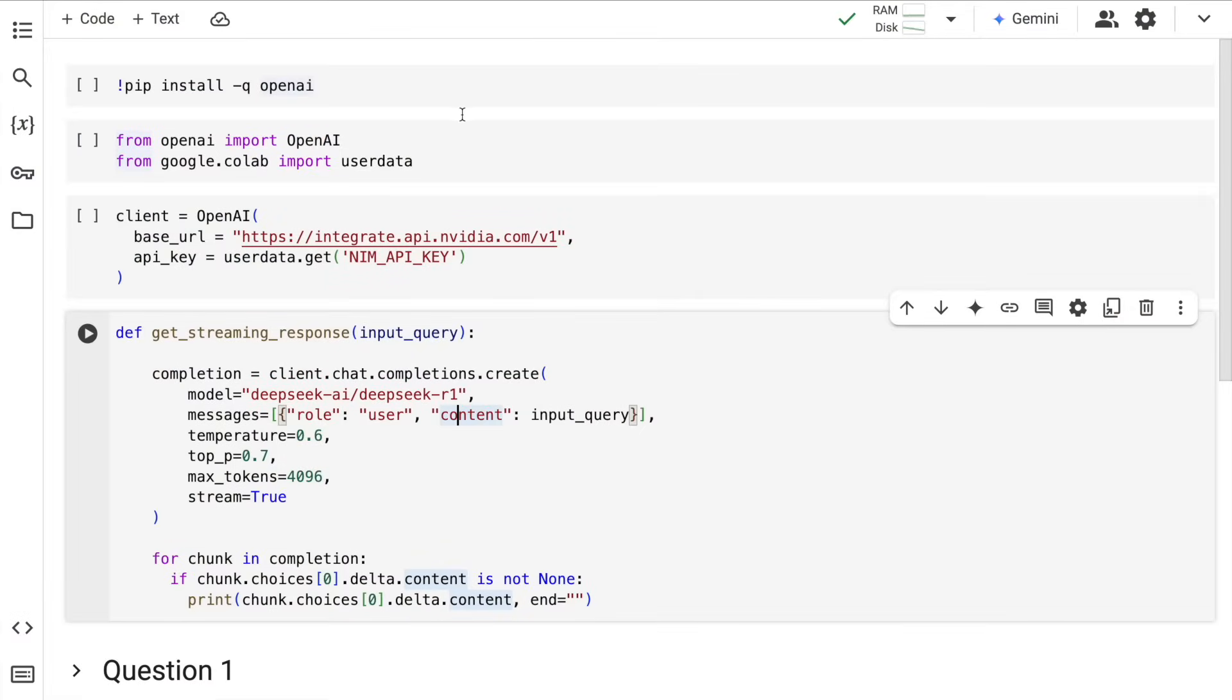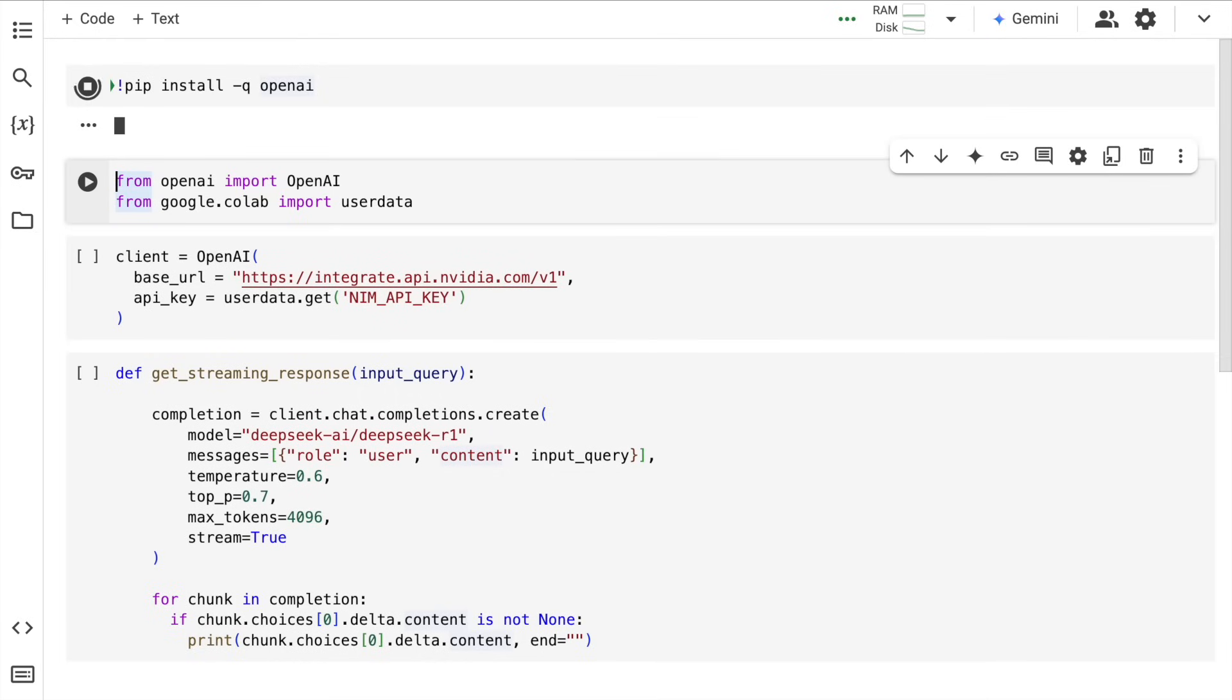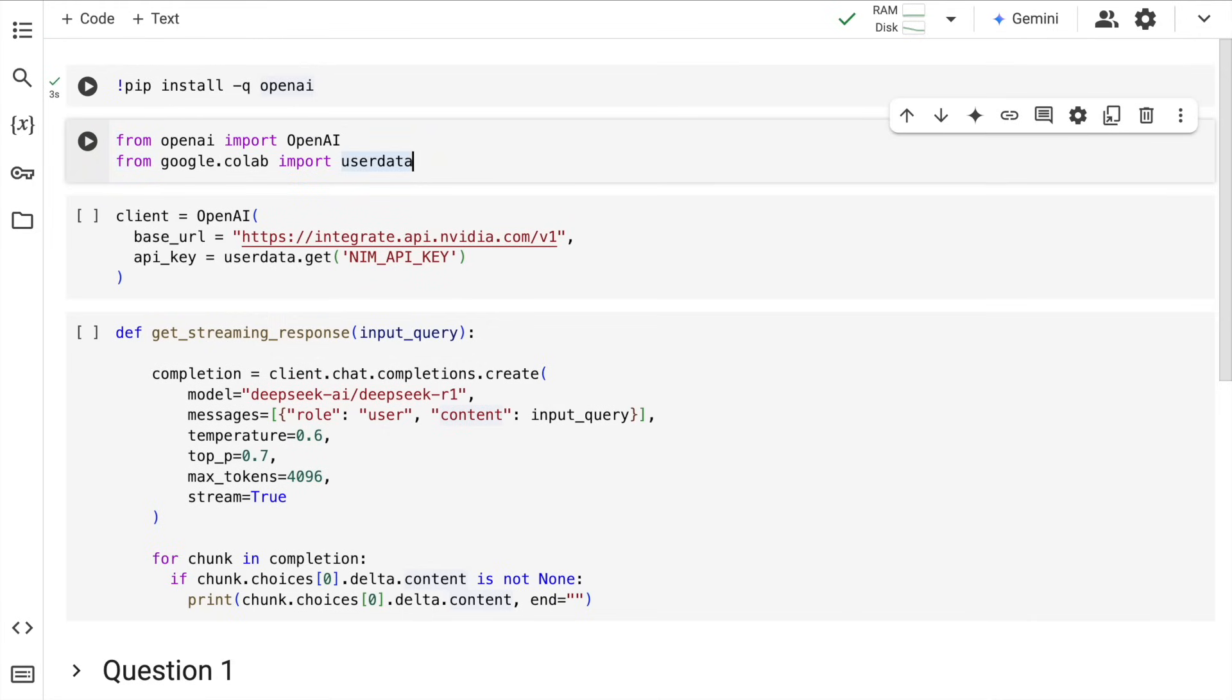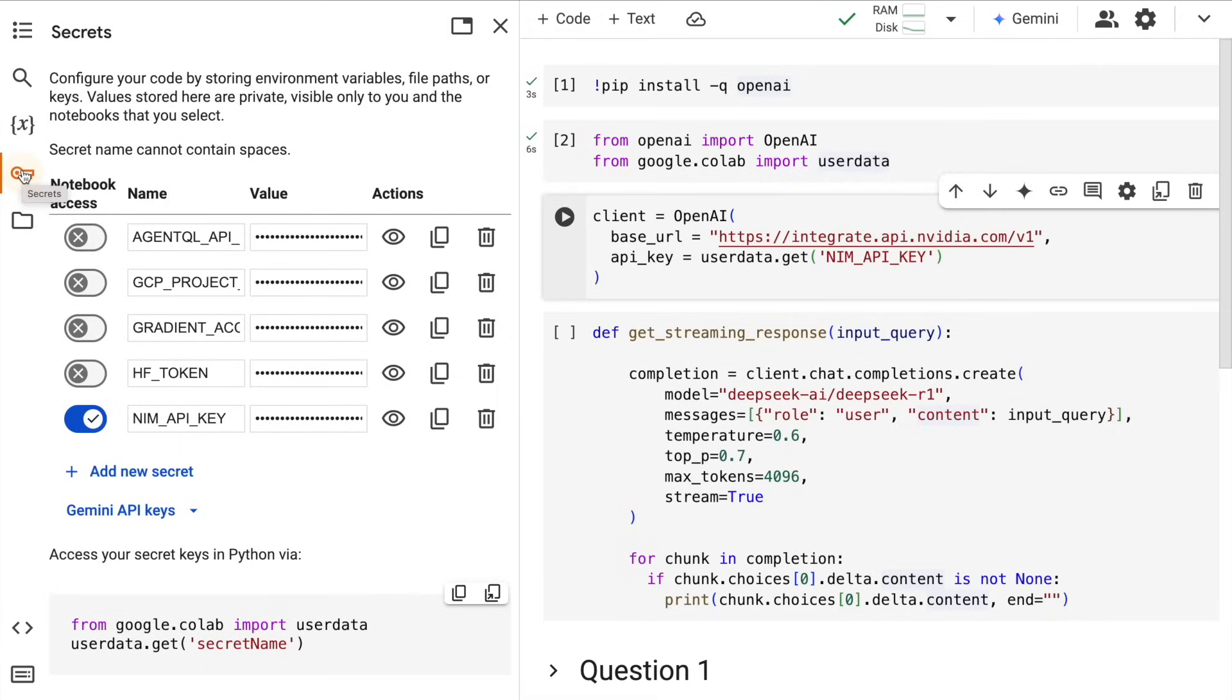I am using Google Colab for this entire video, so I will kick start the coding section by installing the OpenAI package. Once I have installed the OpenAI package, I will import OpenAI and user data from google.colab. To access my NVIDIA NIMS API key, I am using the google.colab user data secret.